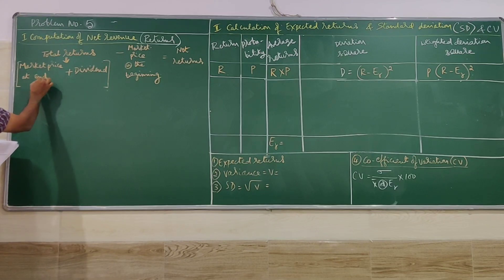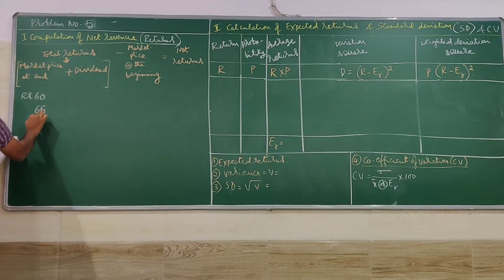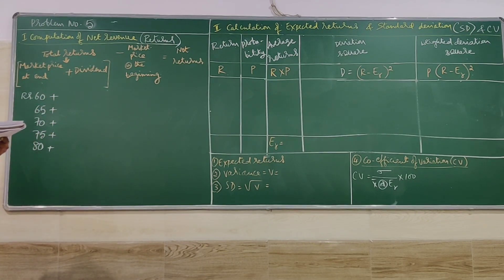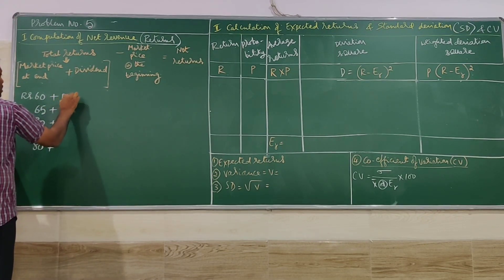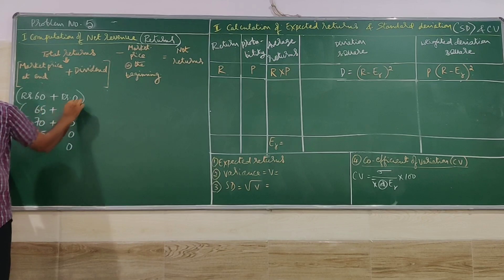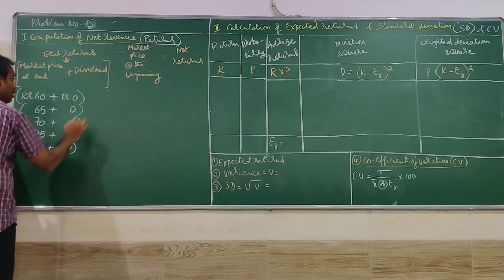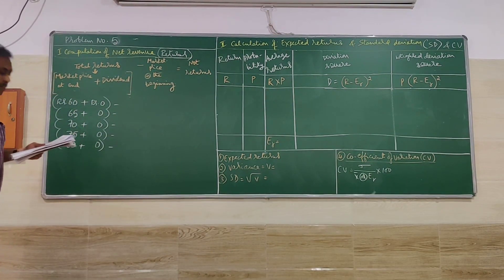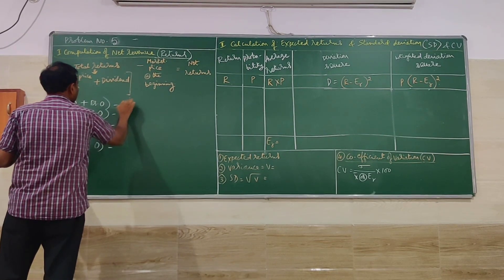First, we list the market price at end of year: rupees 60, 65, 70, 75, and 80. Next, the dividend — since the company does not pay any dividend, the dividend is zero for all years. Then we subtract the beginning share price of rupees 50.